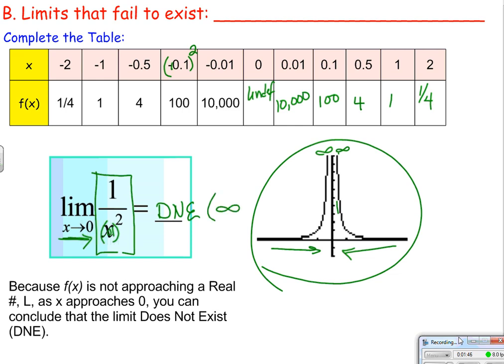If I wanted to, I could give information like it is headed to infinity, it's headed to positive infinity. That lets a person interpreting this know that it's headed very, very high. But does not exist is the technical answer, because infinity is a concept, not a number. And since this limit does not approach a number, it does not exist.